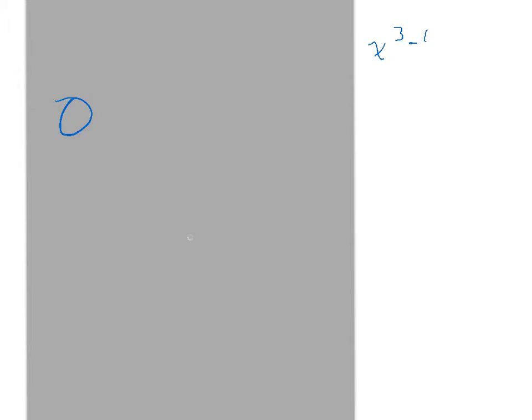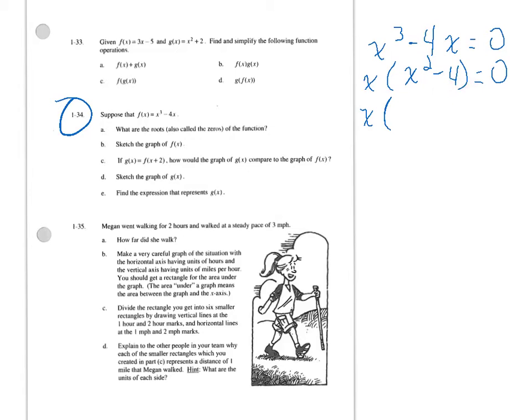A very important topic we're going to discuss here comes out of this problem: What are the roots, also called the zeros, of the function? If F of X is equal to X cubed minus 4X, we set this function equal to zero. This is where you're going to need to review how to factor. As I factor this, I'm going to pull an X out of both terms. I'm left with X times X squared minus 4. I can continue to factor this, because X squared minus 4 is a difference of perfect squares.